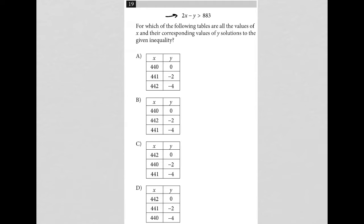This question starts off by providing us with an inequality. It says 2x minus y is greater than 883. The question goes on to say, for which of the following tables are all the values of x and their corresponding values of y solutions to the given inequality?